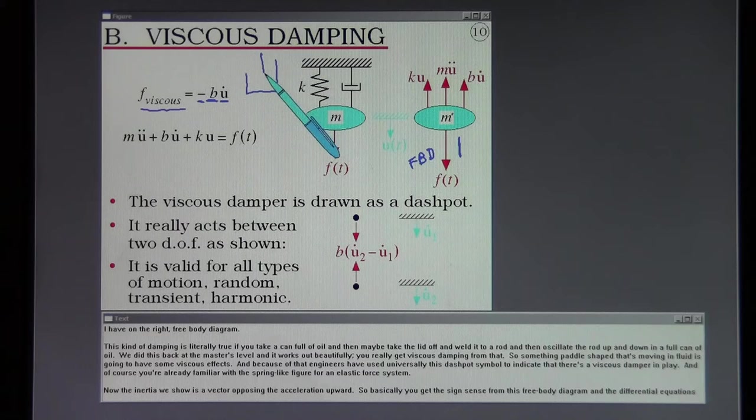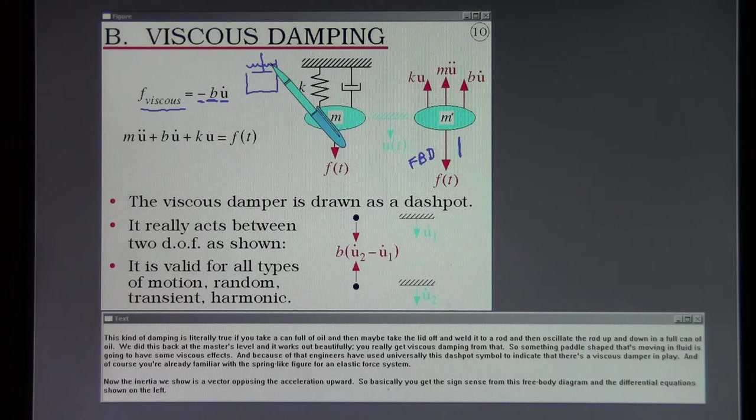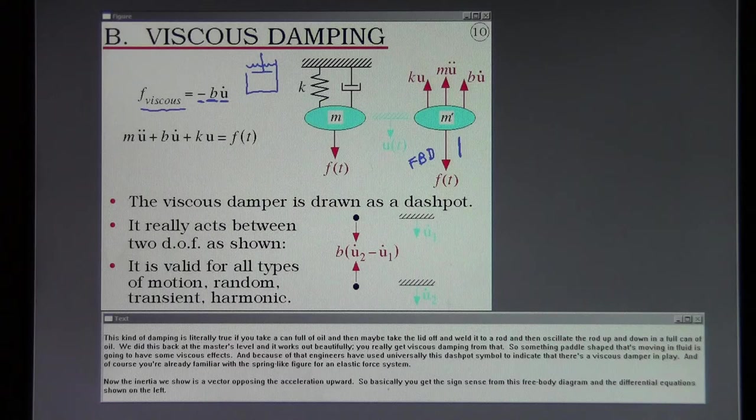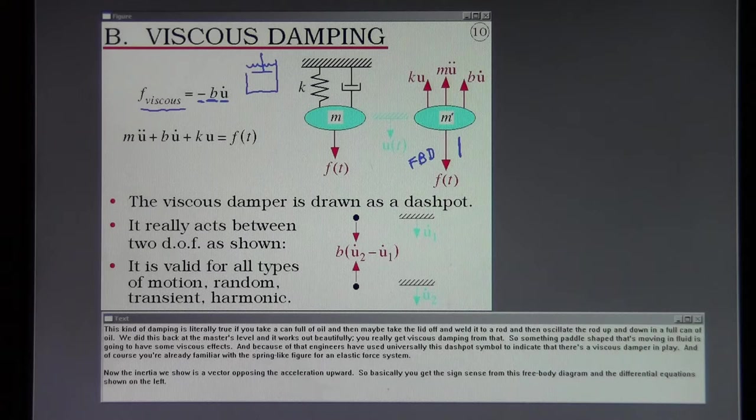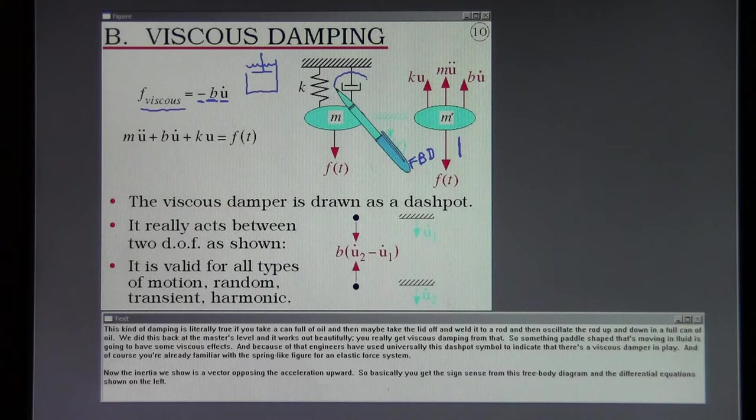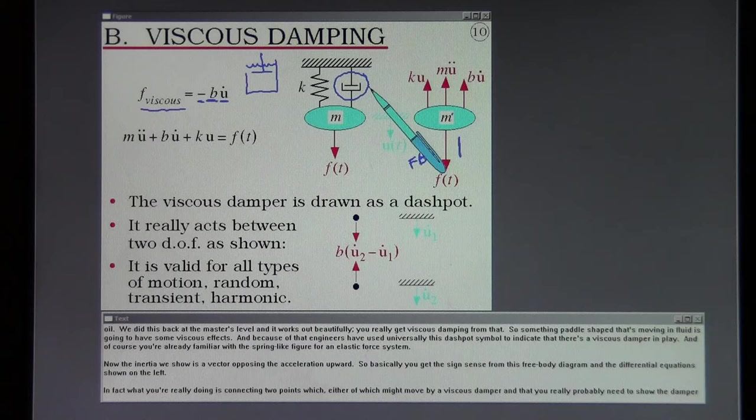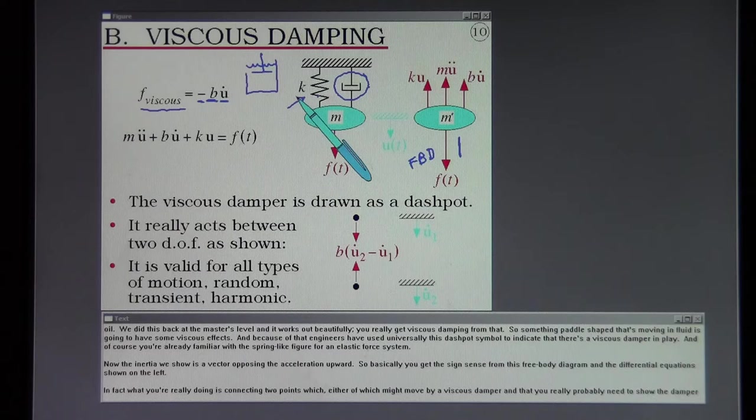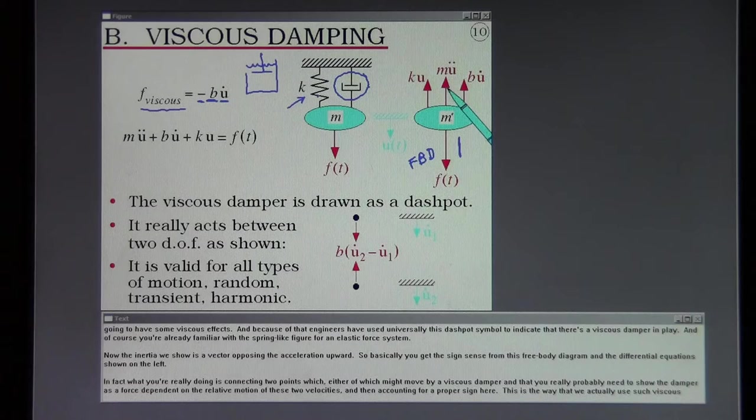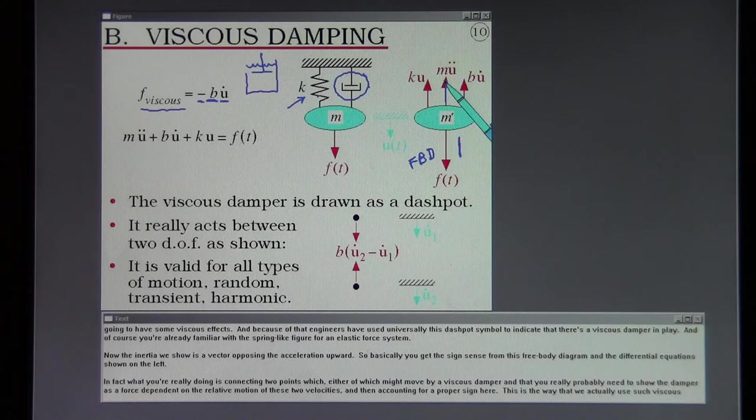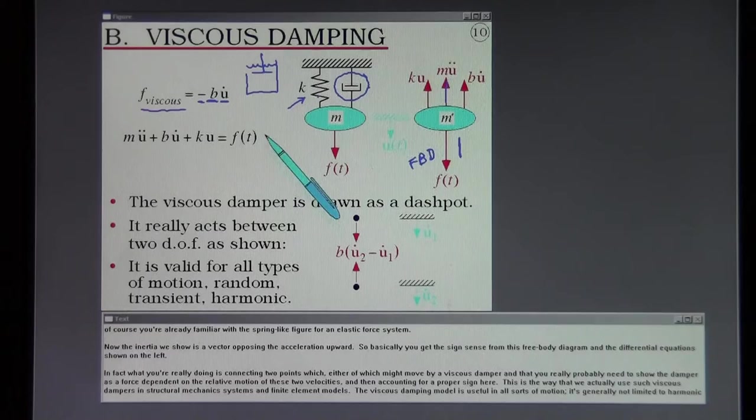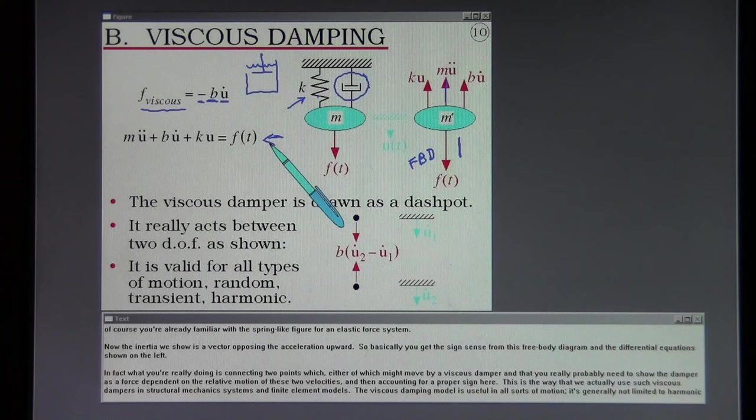This kind of damping is literally true if you take a can full of oil, and then maybe take the lid off and weld it to a rod, and then oscillate the rod up and down in a full can of oil. We did this back at the Masters level, and it works out beautifully. You really get viscous damping from that. So something paddle shaped that's moving in fluid is definitely going to have some viscous effects. And because of that, engineers have used universally this dashpot symbol to indicate that there's a viscous damper in play. And of course you're already familiar with the spring-like figure for an elastic force system. Now the inertia we show is a vector opposing the acceleration upward.